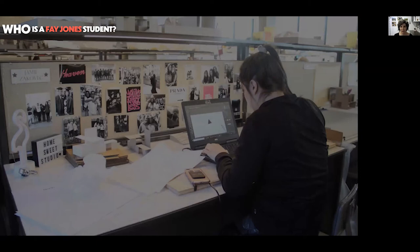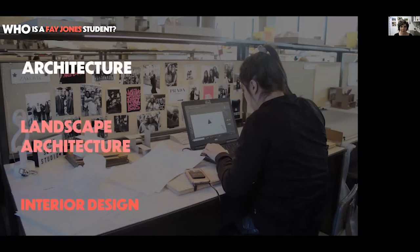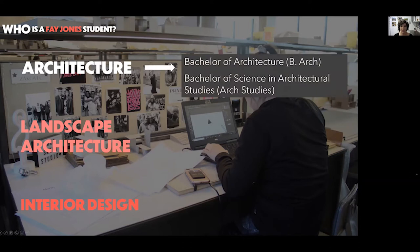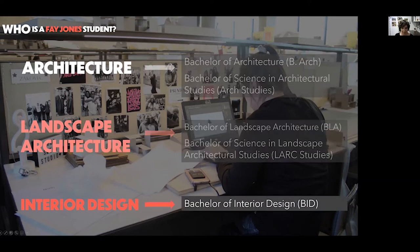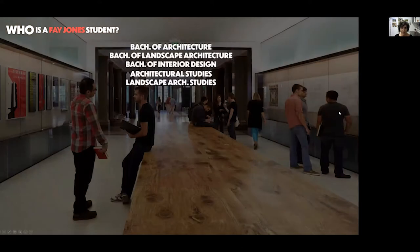Our students fall into three different discipline areas: architecture, landscape architecture, and interior design. We're very specifically focused on design education in one of these three areas. For architecture majors, you can choose to do either a Bachelor of Architecture or a Bachelor of Science in Architectural Studies. For landscape architecture, you can do the Bachelor of Landscape Architecture or the Bachelor of Science in Landscape Architectural Studies — basically the same setup as the architecture programs. And then we have one option for interior design: the Bachelor of Interior Design.